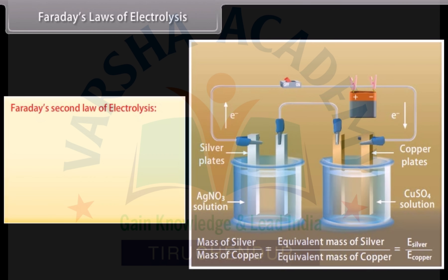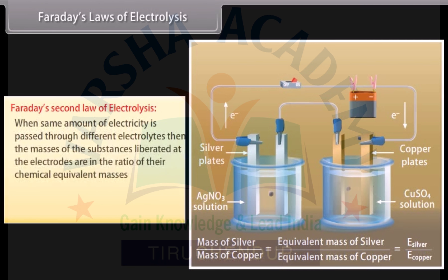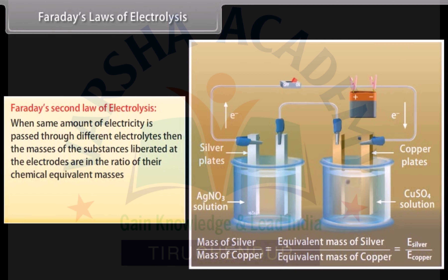Faraday's second law of electrolysis: When the same amount of electricity is passed through different electrolytes, the masses of the substances liberated at the electrodes are in the ratio of their chemical equivalent masses.